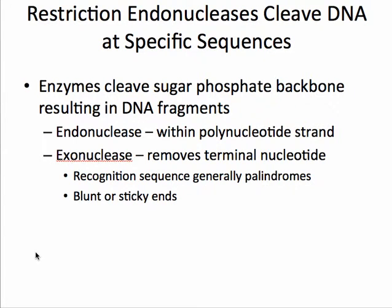For step one, we have to fragment the DNA. We do that using enzymes discovered from bacteria. Bacteria can be infected by viruses called bacteriophages, and to protect themselves from that foreign DNA, bacteria have endonucleases and exonucleases — enzymes that can distinguish between the bacterium's own DNA and foreign DNA. The bacteria tags its own DNA by methylating it, and that chemical tag tells these enzymes not to cleave that particular DNA. So these enzymes will cleave any unmethylated DNA that enters the bacterium.